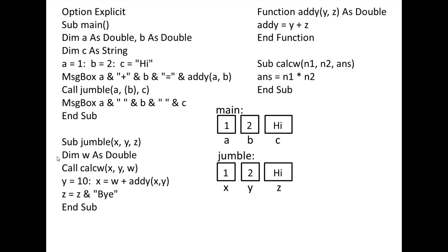Another double variable is created in Jumble named W and it is initialized to the default value of 0. Next, the sub procedure CalcW is called within Jumble. Jumble halts and waits until CalcW is completed before continuing on. In CalcW, the variables n1, n2, and ands are automatically created and given a double data type because the arguments X, Y, and W in Jumble have a double data type.